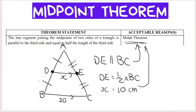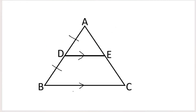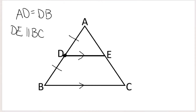Now there is another situation where we use a version of the midpoint theorem. If I give you that AD equals DB — so D is the midpoint of AB, giving you one midpoint — and I also tell you that DE is parallel to BC, so the line connecting this midpoint to the other side is parallel to the third side, what I can conclude from that is that AE is equal to EC. This is basically the converse midpoint theorem, and there is another reason listed in the exam guidelines which I'll go through now.